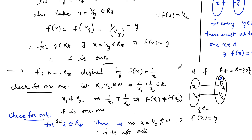So the result is not correct when we change the domain to ℕ. The function is one-to-one but not onto, since for 2 ∈ ℝ*, there is no x = 1/2 which belongs to the natural numbers.